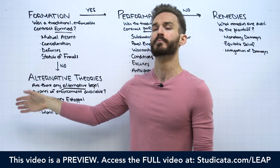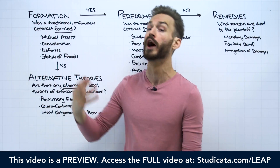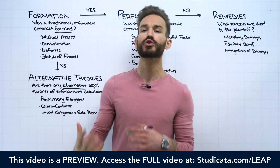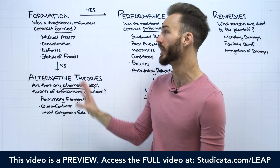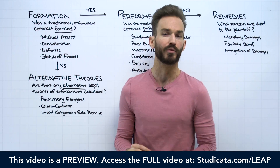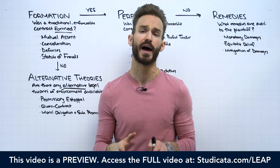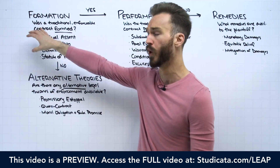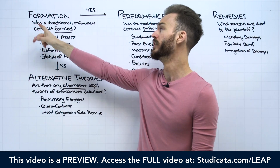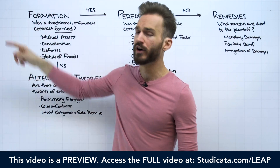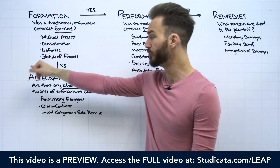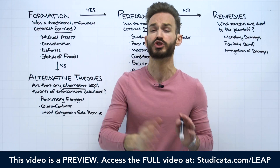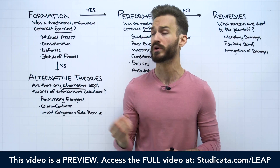So the idea here from a policy perspective is we have the default traditional enforceable contract, and this is what we always want to look at first. But the courts say sometimes, even if you don't have a traditional enforceable contract, to prevent unjust outcomes — in the sake of fairness and equity — we might allow you to still recover damages under one of these alternative theories. This is how we come up with promissory estoppel, quasi-contracts, unjust enrichment, and moral obligations. All of these alternative theories are rooted in ideas of equity and fairness.